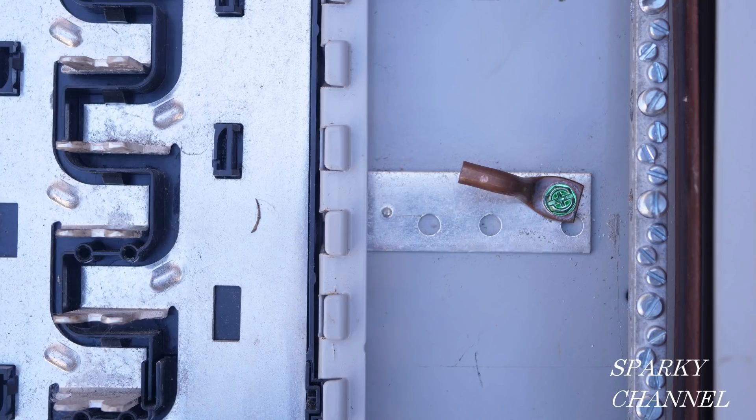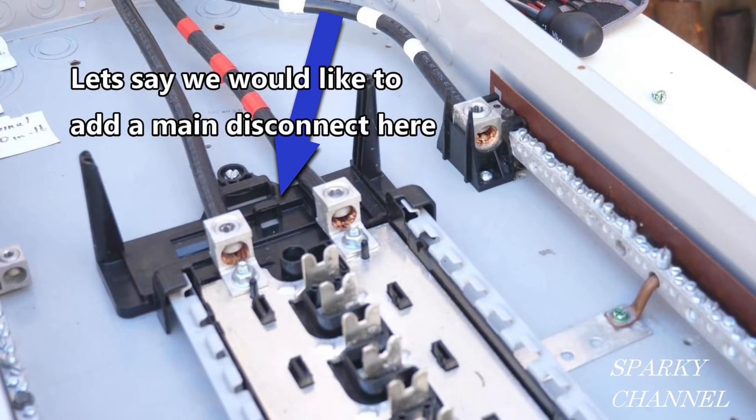So if the bonding strap is not connected to the neutral bar, then the neutral and the ground are isolated electronically. Let's say we would like to add a main disconnect where the blue arrow is, and that this will be the first disconnect in our electrical system.